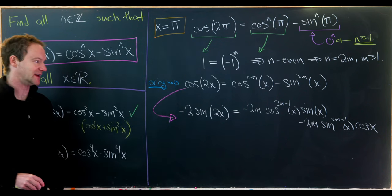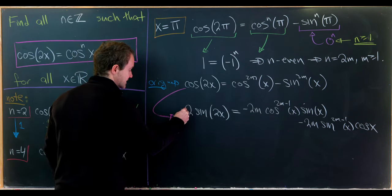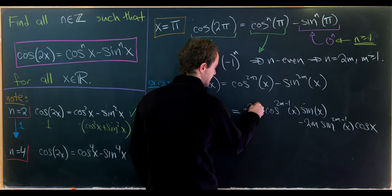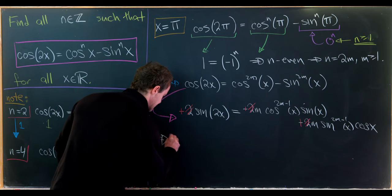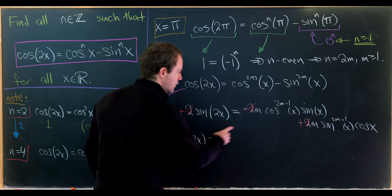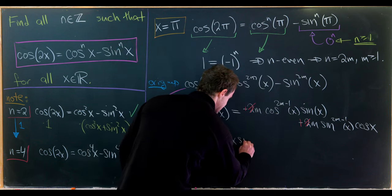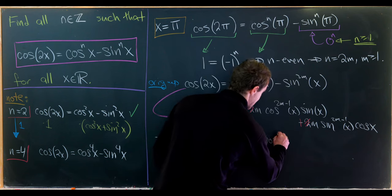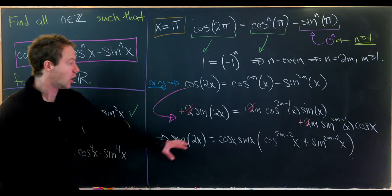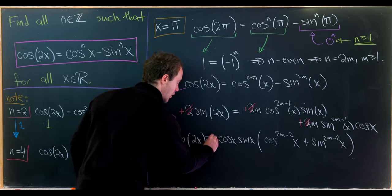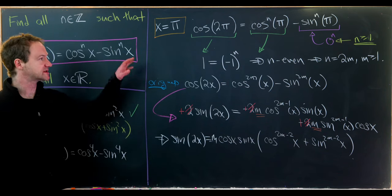We can cancel minus signs out everywhere and we can also cancel 2's out everywhere. That leaves us with sine of 2x equals m times cosine of x times sine of x times the sum: cosine to the 2m minus 2 of x plus sine to the 2m minus 2 of x. And I just realized I forgot my m which was out in front of the whole thing.